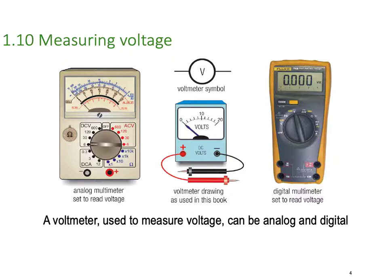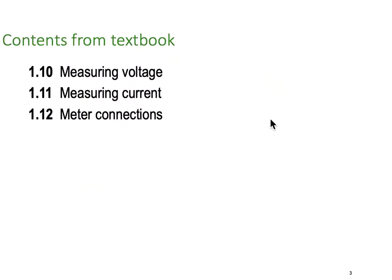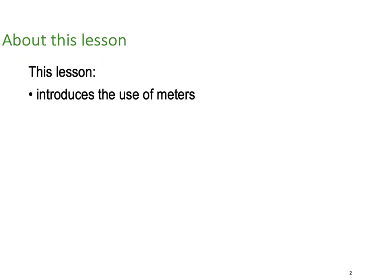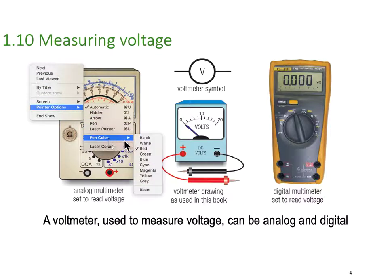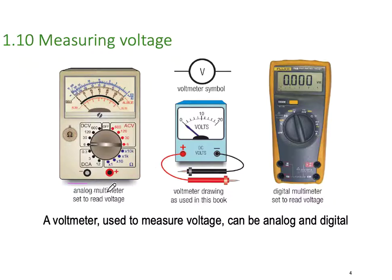The first meter we're going to look at is the voltmeter. Now, there are a few different kinds of voltmeters. We have the analog meter. The good old analog meter literally has a dial with a needle.